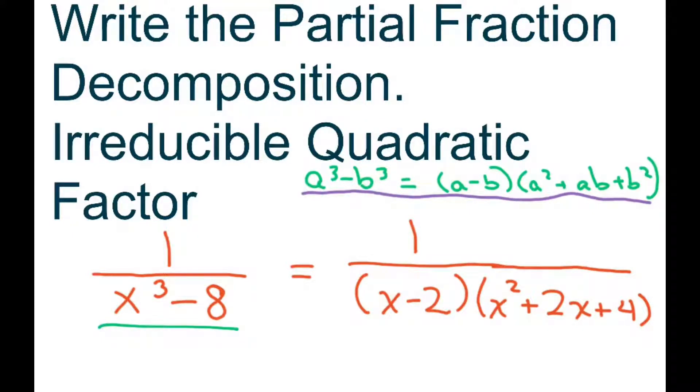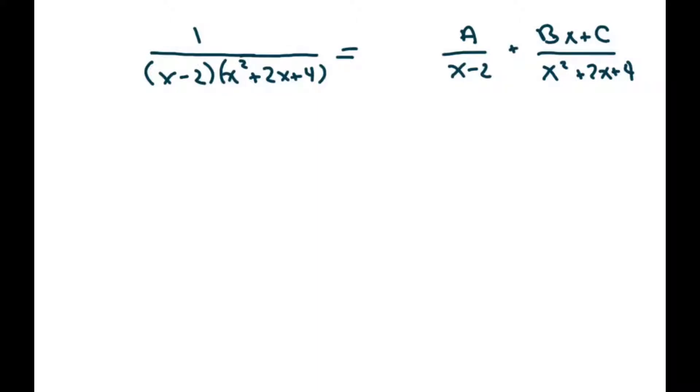Therefore, we have one linear factor and one irreducible quadratic factor, and when you have that, you're going to set it up with a constant, our A, over our linear factor, and be a linear term, so BX plus C over our quadratic.